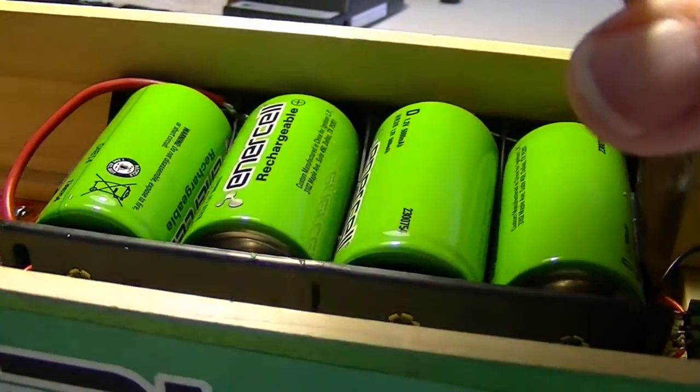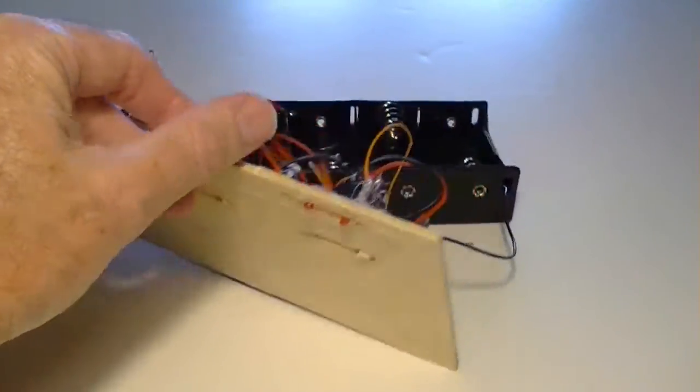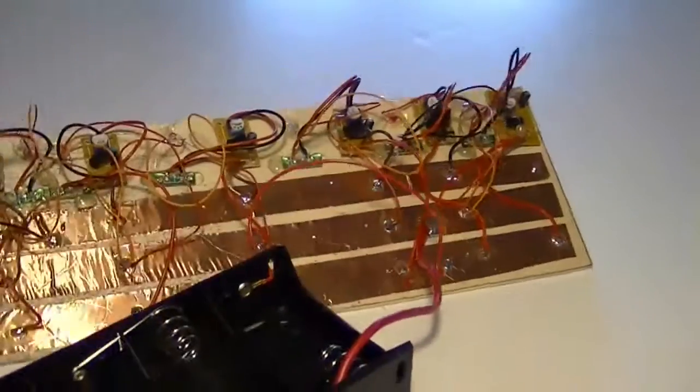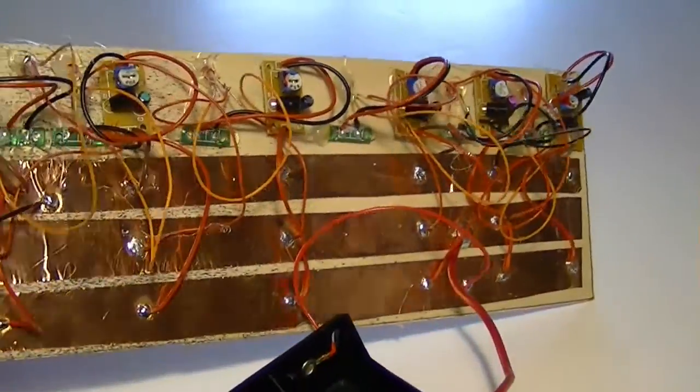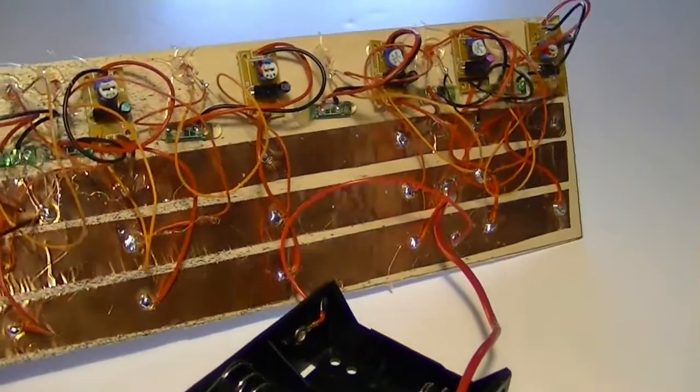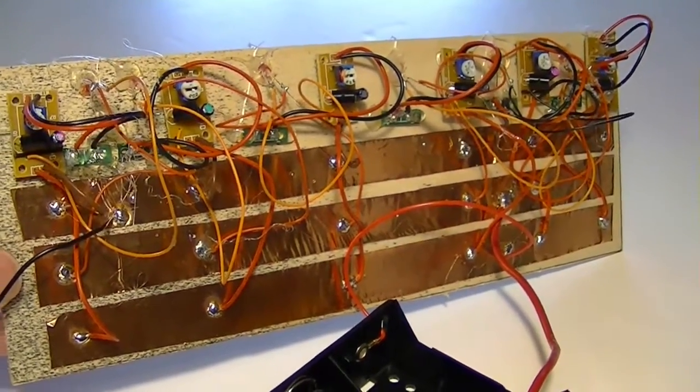So here's what the six port charger looked like before we put it in the box. You can see the wiring under here and there's the battery box. You can go to John's video to see more details on it and I will put a link under this video to his video where we put it together.